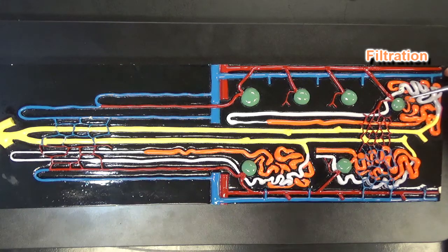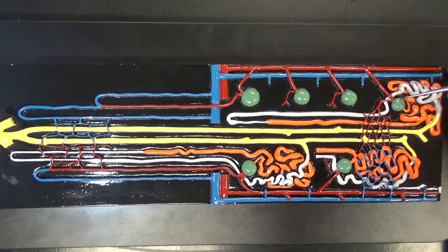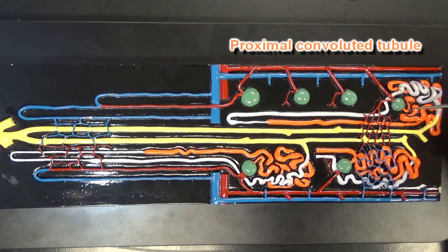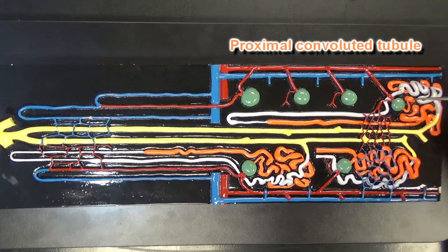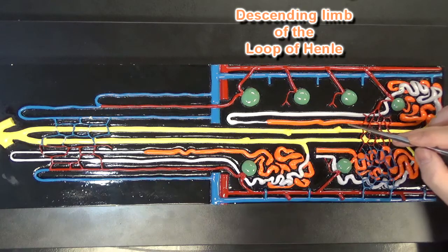Now filtration is going to happen inside these glomerular capsules or Bowman's capsules and that filtrate will be directed into the proximal convoluted tubule which we can see in orange here. We can follow the proximal convoluted tubule down to the descending limb of the loop of Henle.